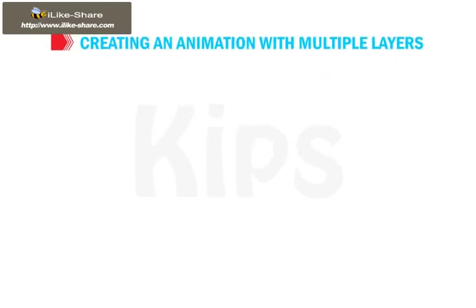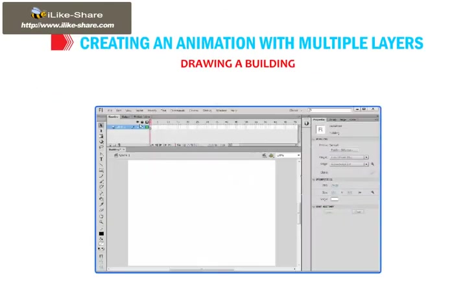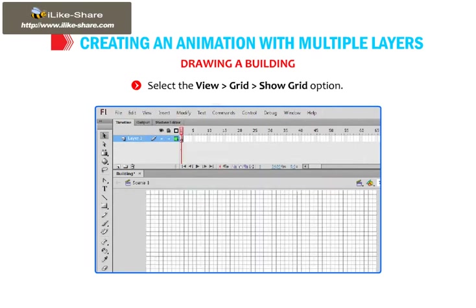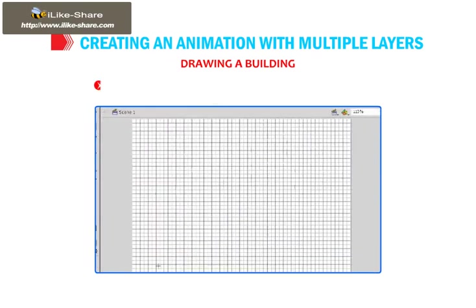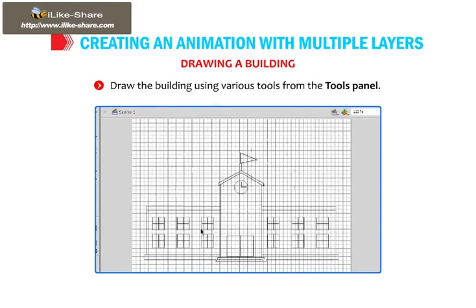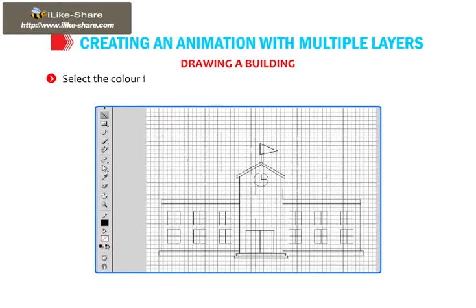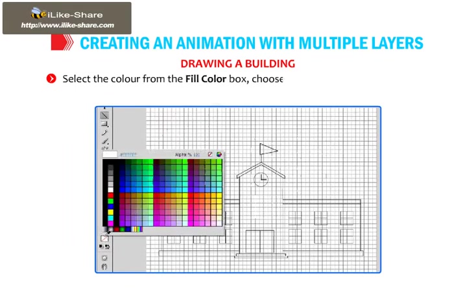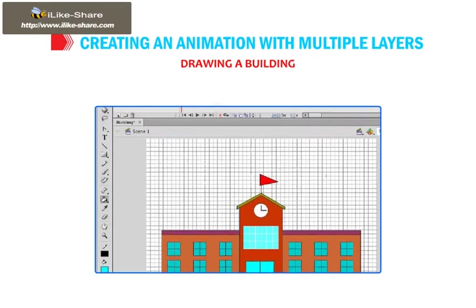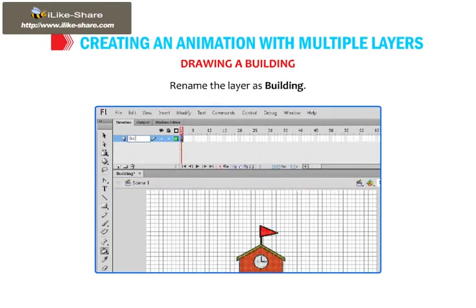Let me tell you how to create an animation with multiple layers. Drawing a building: select View, then Grid, then Show Grid option. Draw the building using various tools from the Tools panel. Select the color from the fill color box, choose the Paint Bucket tool and click inside the building. Rename the layer as 'building'.